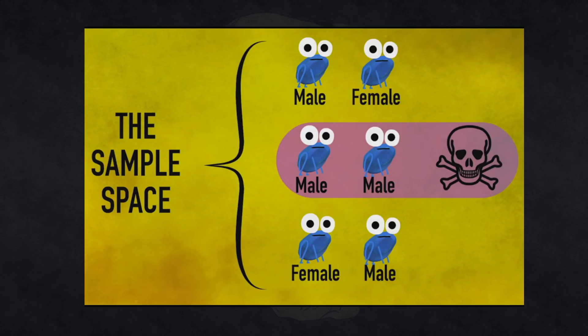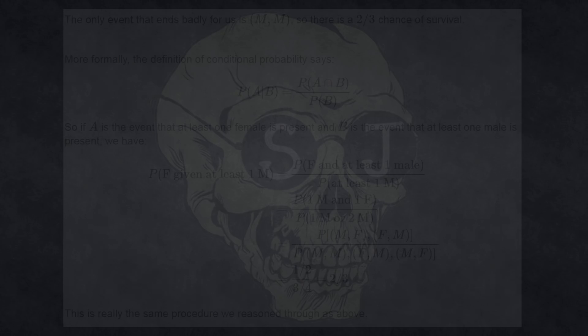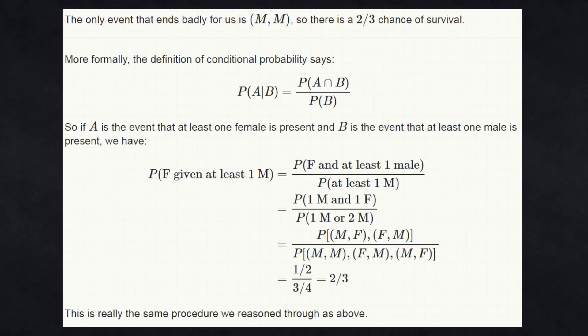These are the only three possibilities, but because of how we find out the information — a behavior which would occur twice as much with two males — they're not all equally likely possibilities. And if we account for the increased likelihood of the male-male possibility occurring, I'd put the odds of surviving back down at around 50%. And why only 'around' and not exactly? I guess you need to account for the odds of hearing one male croak and not hearing the other male croak. But I'm rapidly getting out of my depth here, so I'm just gonna leave that alone.